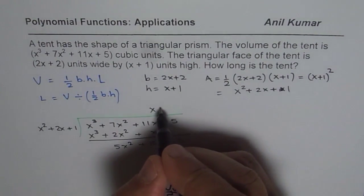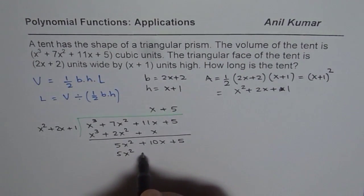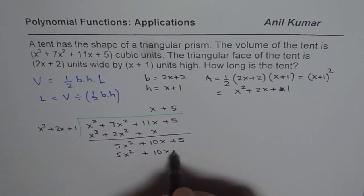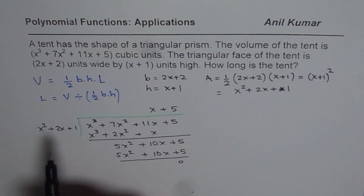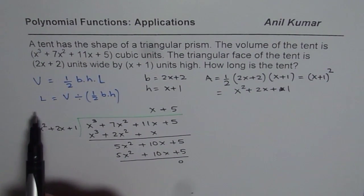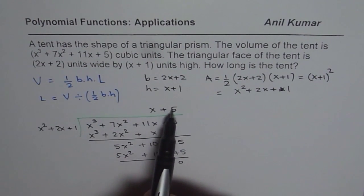Now we can multiply by plus 5. So you get 5x squared plus 10x plus 5. The remainder is 0. That means when you divide the volume by the area, you get the length, which is x plus 5.